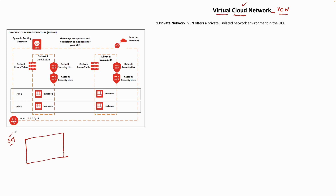So it is a private network — not a public network. It is virtual in nature, not a physical network. It offers a private isolated network environment in OCI. You can think of it like every customer would have its own VCN, isolated from each other. Even within your tenancy, you can create multiple VCNs and those would be isolated from each other.